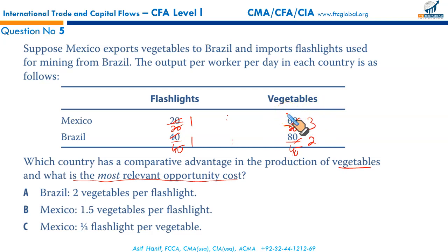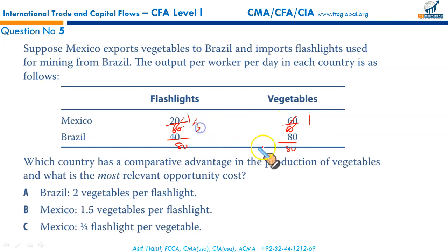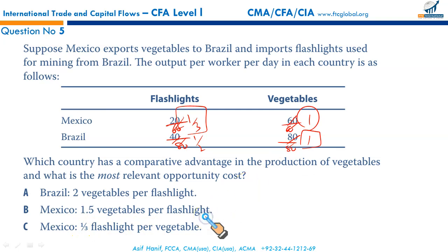Alternatively, looking at the opportunity cost of producing one vegetable: for Mexico it is 1/3 of a flashlight, and for Brazil it is 1/2 of a flashlight. Mexico's relevant opportunity cost is 1/3 flashlight per vegetable, which is lower than Brazil's 1/2. That makes C the correct option.